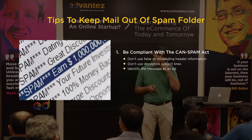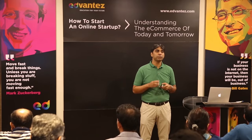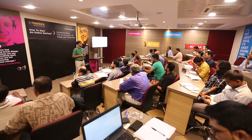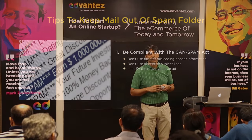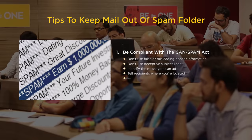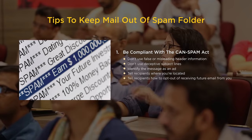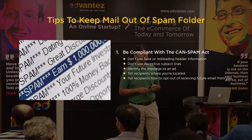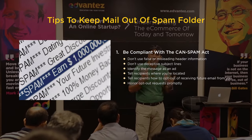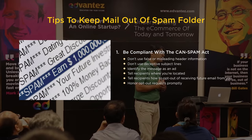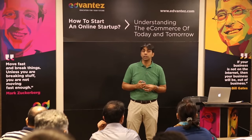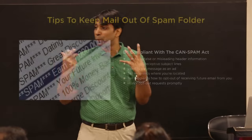Identify the message as an ad — it may work well to tell recipients that what they're looking at is a promotion. Don't try to hide it. Tell recipients where you're located and how to opt out of receiving future emails. Opt-out must be present. Honor opt-out requests promptly — make sure they're unsubscribed before the next email goes out. If you don't, they'll complain and go to social media to write about how bad you are.